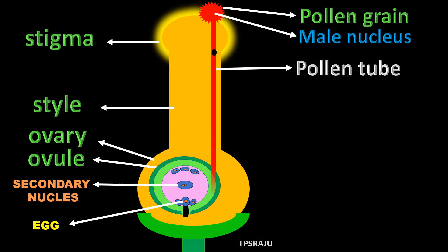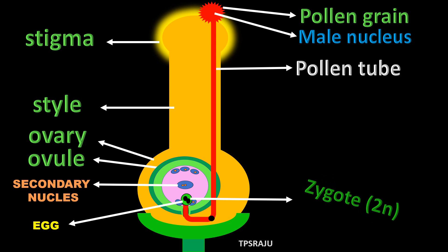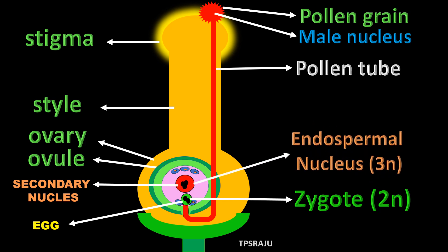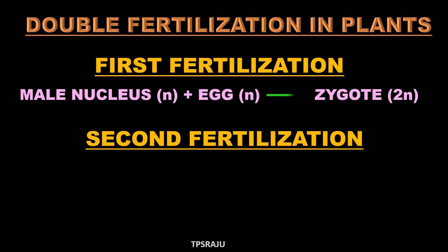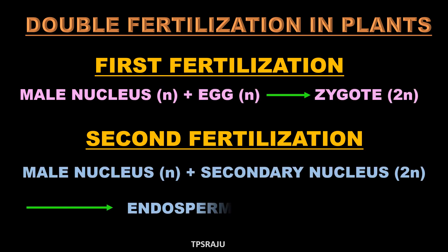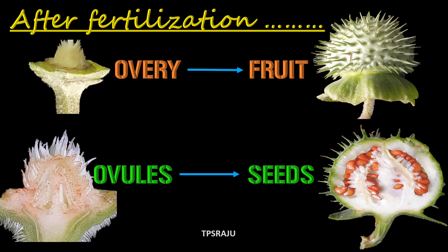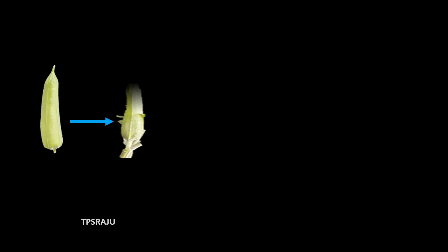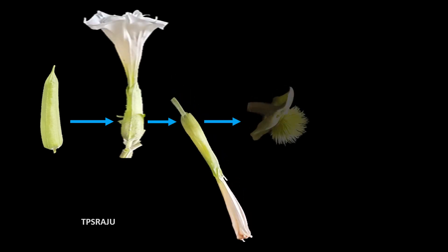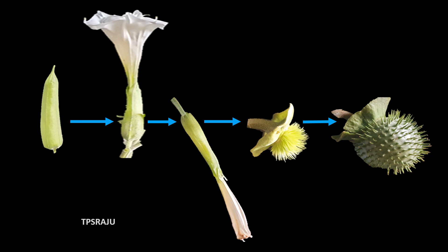Once again observe the double fertilization process in plants. After fertilization, the ovary is converted into a fruit while ovules are converted into seeds. Likewise, fruits are developed from flowers due to the processes of pollination and fertilization.